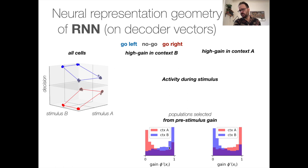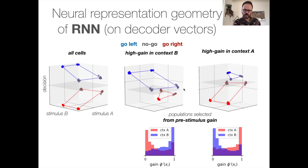And this gain is going to be computed during the pre-stimulus. But we're going to look at the activity during the stimulus. And we see again this gain modulation picture. So however, we select these populations based on the pre-stimulus gain, during the stimulus, there is this gain modulation that clearly favors one context or the other, depending on the population.